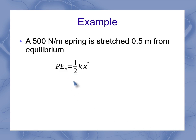Starting with my equation, I recognize that 500 newton per meter is my spring constant, so that goes in for k. And 0.5 meters is my distance, so that goes in for x. Plugging those numbers in and remembering to square that x value, I end up with 62.5 joules.